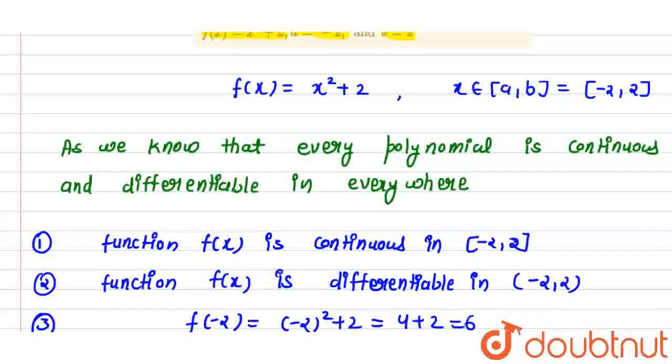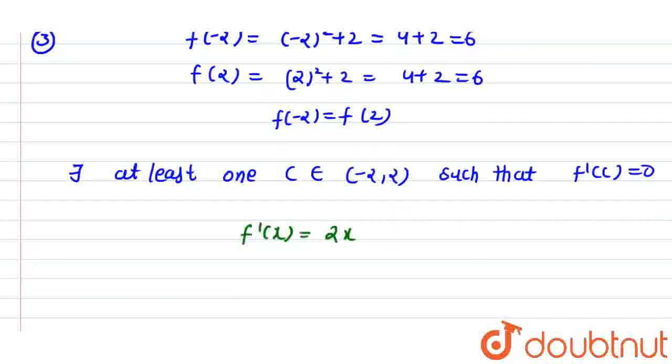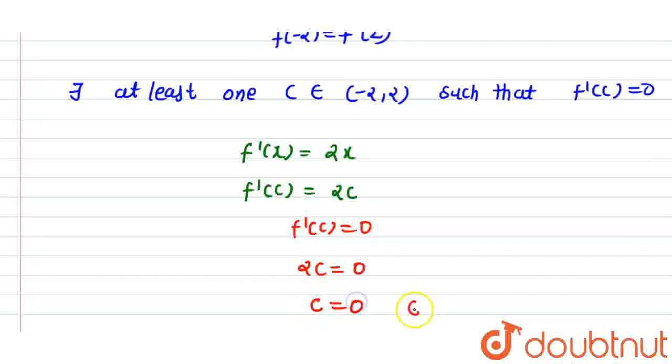That belongs to minus 2 and 2. So f'(c) is equal to 0. Differentiating f(x), we get 2x, and the constant term has differentiation 0. So f'(c) will be 2c, and given condition that f'(c) is equal to 0, that means 2c is equal to 0. So c is equal to 0 and 0 belongs to minus 2 to 2.